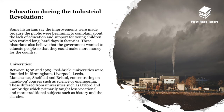Universities also experienced change. Between 1900 and 1909, red brick universities were founded in Birmingham, Liverpool, Leeds, Manchester, Sheffield and Bristol, concentrating on hands-on courses such as science and engineering. These differed from universities like Oxford and Cambridge, which primarily taught less vocational and more traditional subjects such as history and the classics. This is the origin of the distinction between 'Oxbridge' and 'Red Brick' universities.